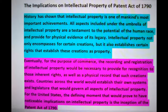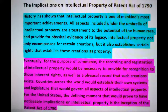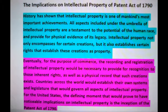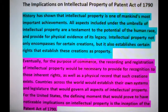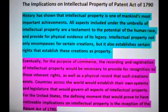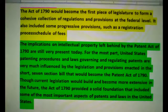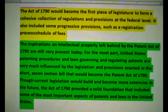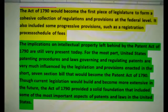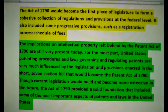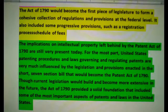For the purpose of commerce, the recording and registration of intellectual property would be necessary to provide recognition to those inherent rights, as well as a physical record that such creations exist. Countries across the world would establish their own systems and legislation to govern all aspects of intellectual property. For the United States, the defining moment that would prove to have noticeable implications on intellectual property is the inception of the Patent Act of 1790. The Act of 1790 would become the first piece of legislation to form a cohesive collection of regulations and provisions at the federal level. It also included some progressive provisions such as registration, process, and a schedule of fees. The implications on intellectual property left behind by the Patent Act of 1790 are still very present today.